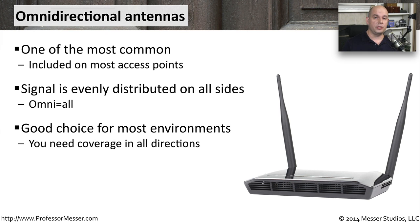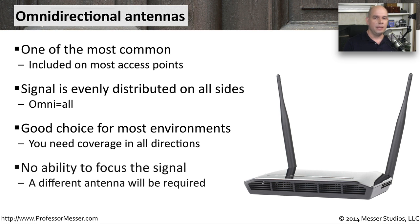In many environments, this is a pretty good choice, because you can put the antenna in a central area and no matter where you happen to be, you're getting the same signal strength from anywhere around that access point. The problem occurs when you want to have a little more signal in a particular area. An omnidirectional antenna is very good at evenly distributing the signal throughout, but if you want more signal in a particular area, you'll need to use a different kind of antenna.